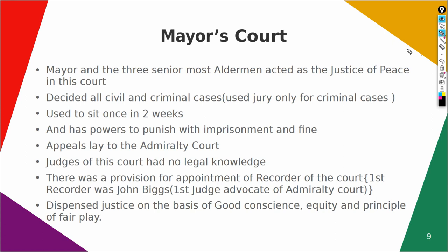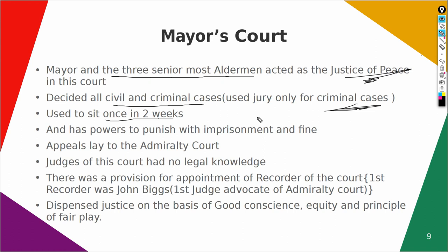Now let us look at the provisions regarding the Mayor's Court in the third phase of Madras Presidency. The Mayor's Court consisted of the Mayor and the three senior-most Aldermen, who acted as Justices of the Peace. This court decided all civil as well as criminal cases. They used a jury only for criminal cases — for civil cases they decided themselves. They used to sit once every two weeks and had powers to punish a person with imprisonment or fine. Appeals from this court lay to the Admiralty Court.